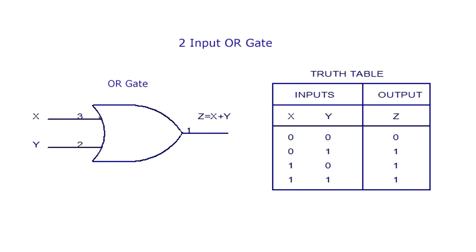So if you use this logic gate in a circuit and give zero volts at X and zero volts at Y, you get zero volts output. In another case, if you give zero volts at X and five volts at Y, you get five volts output, and so on for other cases in the truth table.